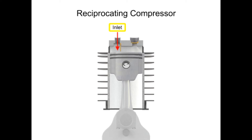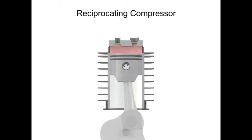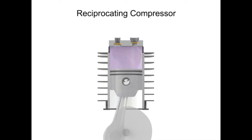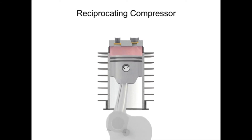The inlet, sometimes called the suction valve, allows atmospheric air to enter the cylinder. The outlet, sometimes called the discharge valve, ejects the newly compressed air from the cylinder. As the crankshaft turns, the piston lowers and raises, changing the available volume within the cylinder.